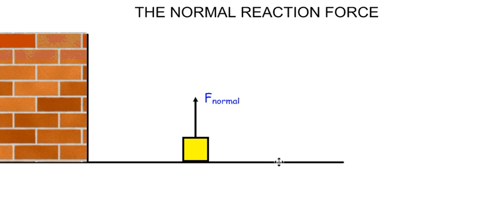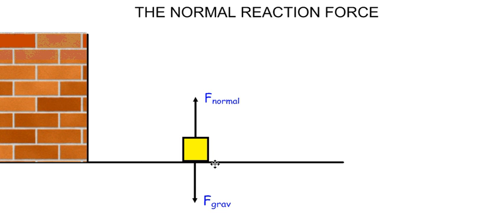The normal force acts perpendicularly away from the surface of the action force. And like any reaction force that is a result of Newton's third law, it must be equal and opposite to the action force. In this case, the crate pushed the floor with a force equal to its gravitational force because it was being pulled down by gravity. And therefore, the floor reacted and pushed the crate upwards with an equal and opposite force.